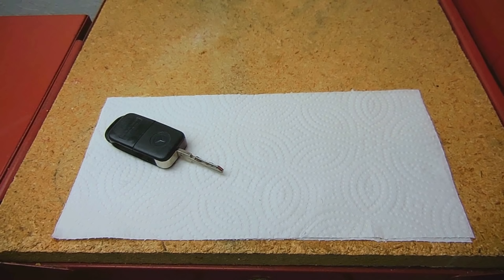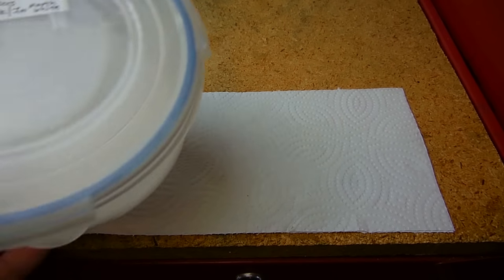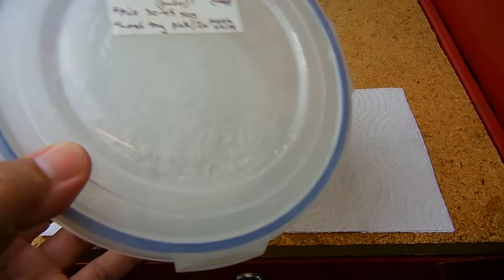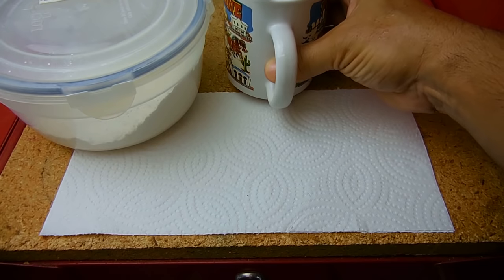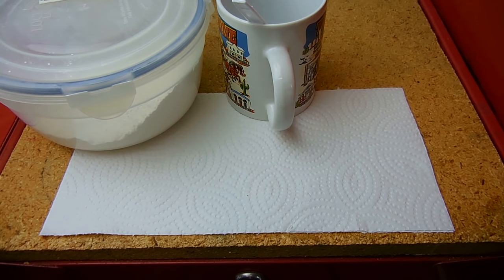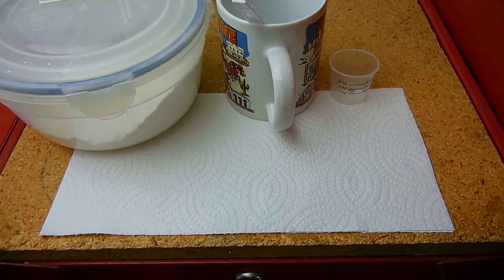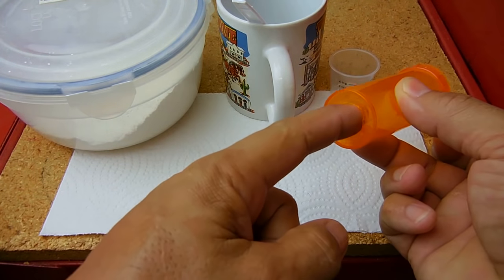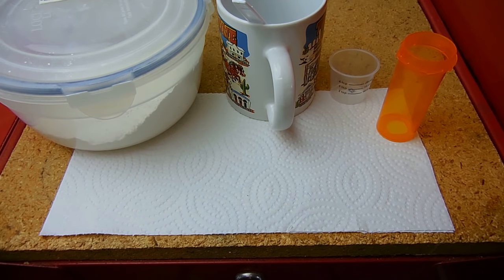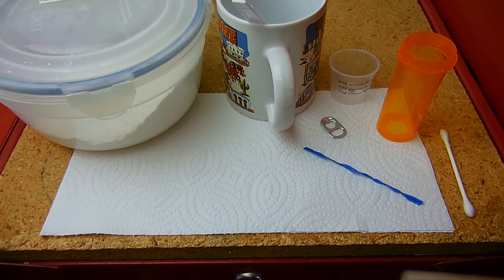To get started, I'm going to show you the supplies you will need. Besides the key that you're going to copy, you're going to need some fast-setting dental alginate, a powder like you see inside this container. You're also going to need a small bowl or cup with a mixing spoon, another small cup like you see here, a small prescription drug plastic bottle like you see right here with a hole cut in the bottom that allows me to get my finger inside, a pull tab from a can of soda, a Q-tip, and a twist tie from a loaf of bread.